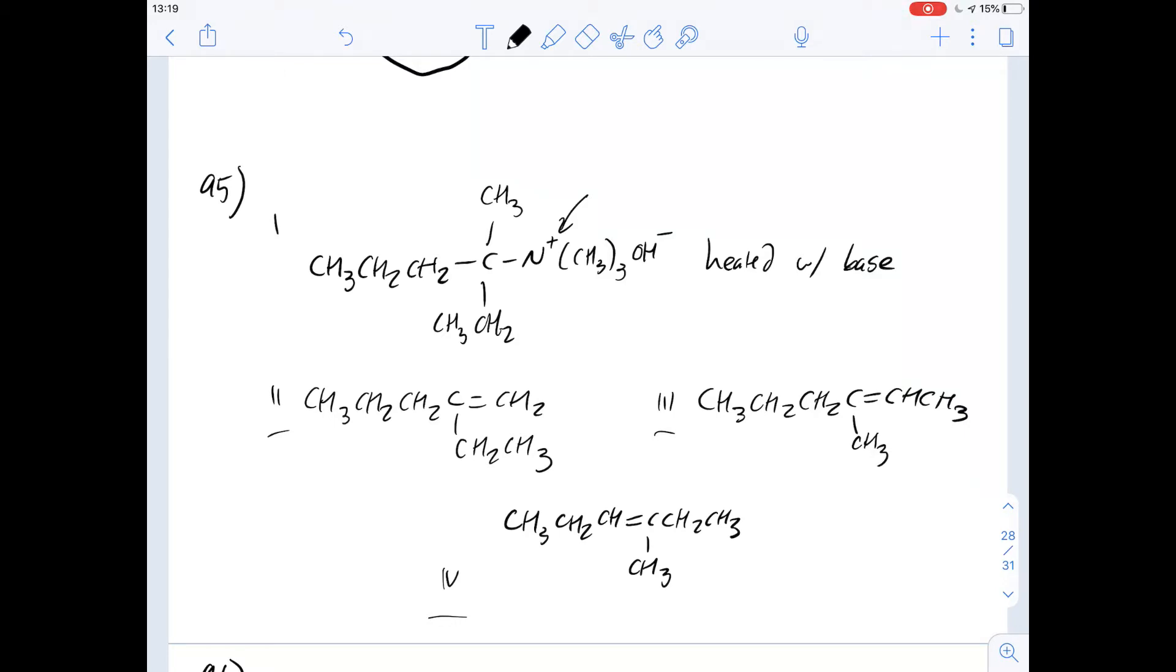So that's an important one. That's how we can work out what the major product of this would be, the one that's least substituted with alkyl groups. So what does that mean? When we're looking at the alkene group here, which I'll draw here, which is this carbon-carbon double bond, the least substituted with different alkyl groups.